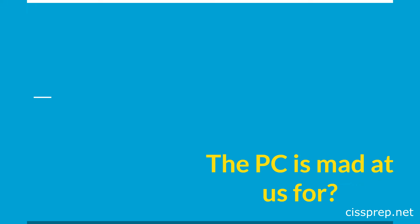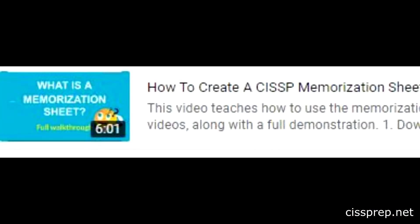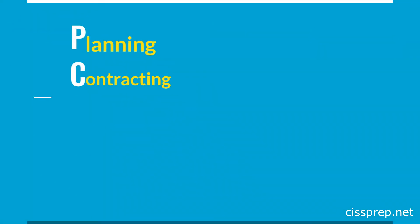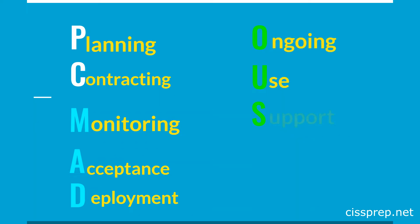The letters we're going to use are these, and some of them will be clumped together. It's going to be P followed by C, then M-A-D for mad, then O-U-S, and lastly F-O. The phrase is: the PC is mad at us, foe — or for. P is for the planning phase, C is for the contracting phase. M-A-D stands for monitoring, acceptance, and deployment — that's one phase, colored in light blue. O-U-S stands for ongoing use and support — colored green. And lastly, we have the follow-on phase. So we have five total phases.